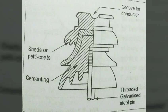The conductors of overhead transmission lines should be supported on the towers in such a way that current from conductors does not flow to earth through supports. The flow of current is prevented with the help of insulators.